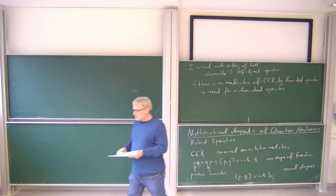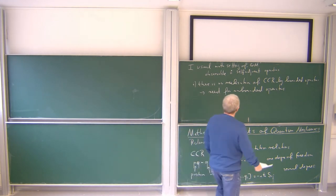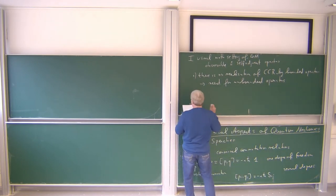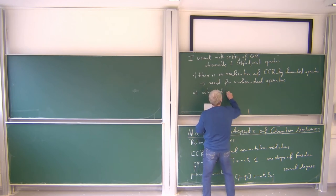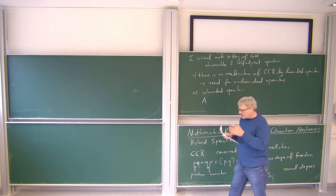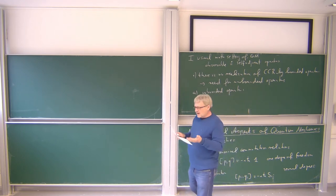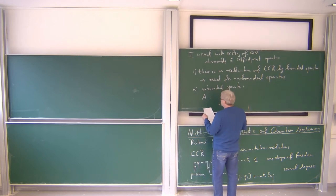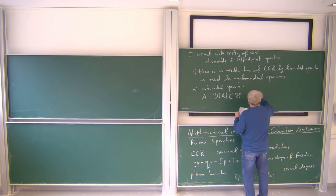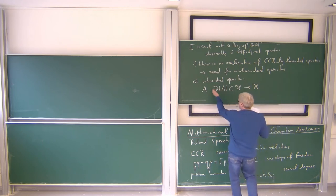We will try to understand unbounded operators and I will explain what these are — in particular, what are self-adjoint unbounded operators, since what we really want are self-adjoint operators. An unbounded operator is a linear operator on the Hilbert space, but unbounded operators are not defined everywhere; they come with their domain. An unbounded operator is defined on a domain, which usually should be a dense subset of the Hilbert space, and it maps this domain to the Hilbert space.